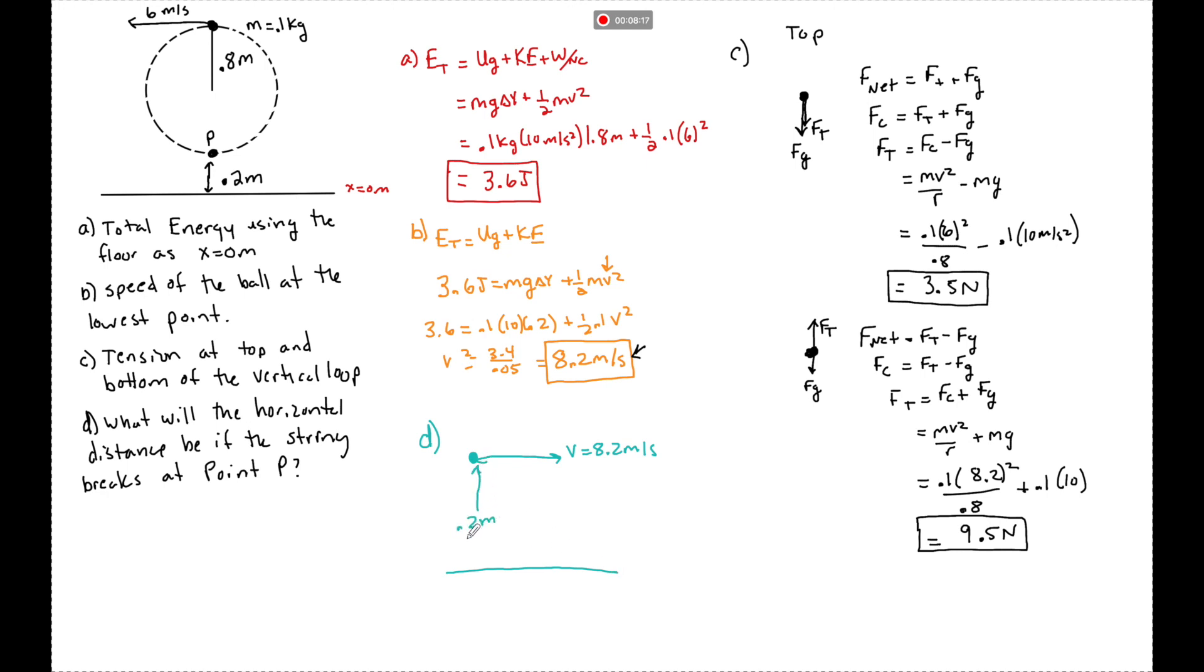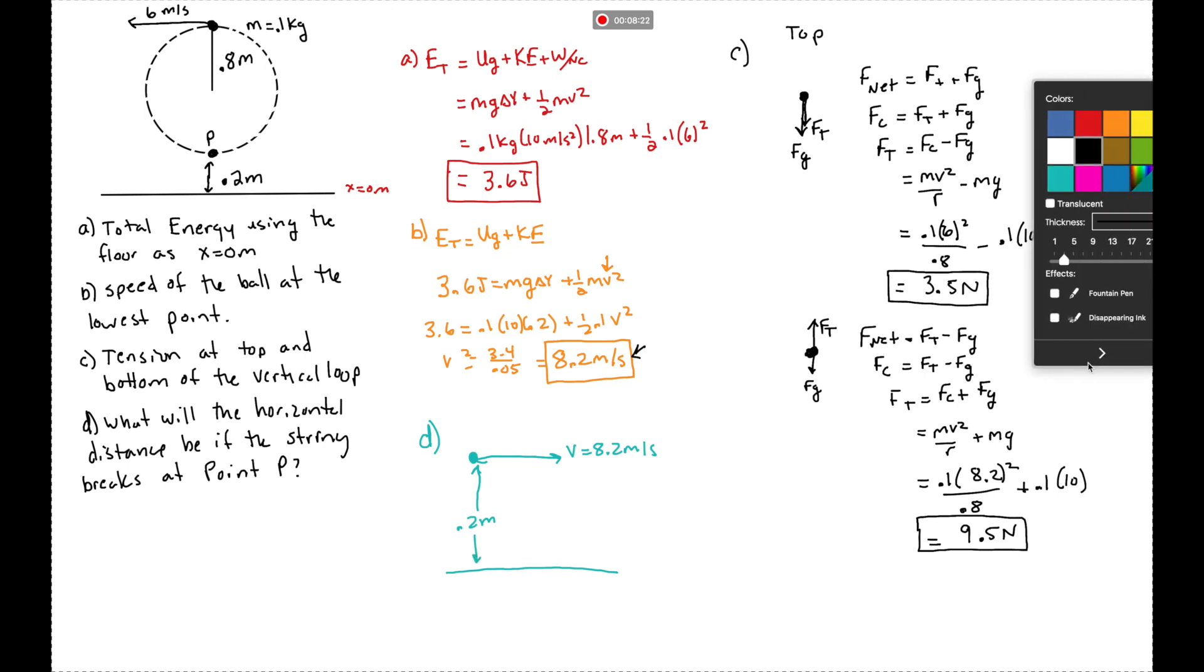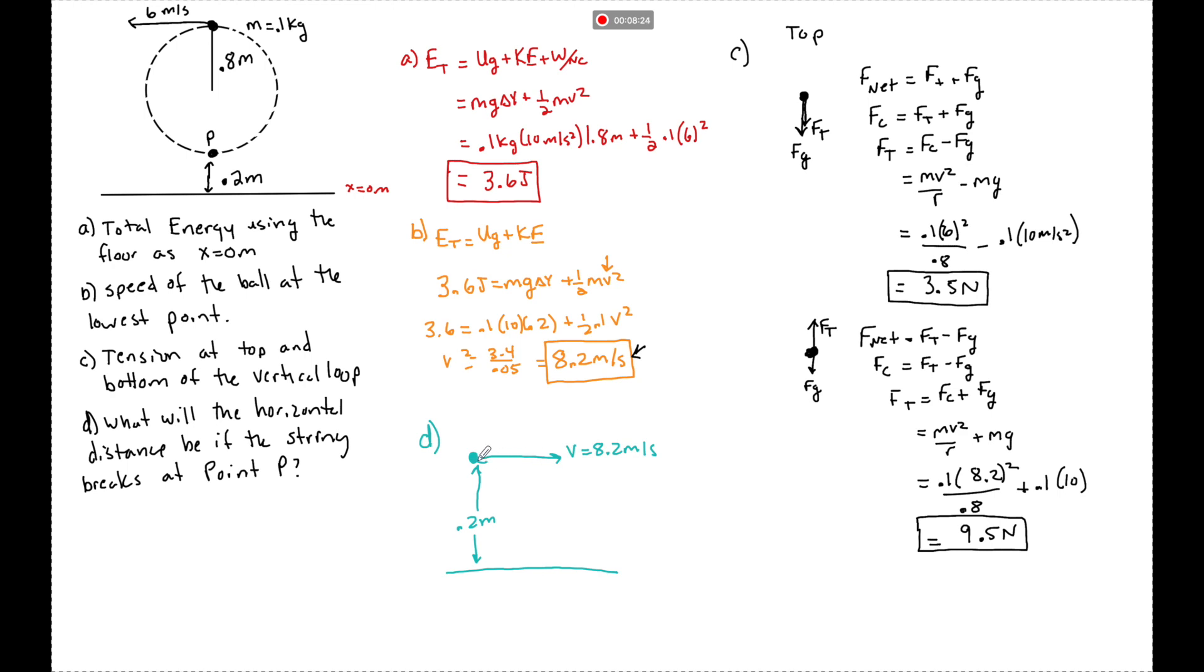So it has a horizontal speed equal to 8.2 meters per second. And it has a height above the floor equal to 0.2 meters. Now, this is in the y direction. And essentially now, this goes back to earlier in the year. All this thing is now is a horizontal projectile. And they want to know what is the x distance here.